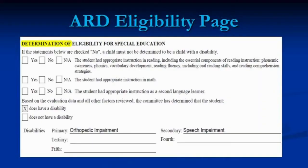In the ARD paperwork, there's a determination of eligibility for special ed. There are sections on that ARD form that list the student's disabilities. We're required to send up to three disabilities to PEIMS — the primary condition, secondary, and tertiary will be the ones reported to PEIMS. Many children who are medically involved may have a fourth or fifth disability that we can show on the paperwork. The evaluation should establish that, and once decided at the first ARD, it should stay until there's another evaluation.